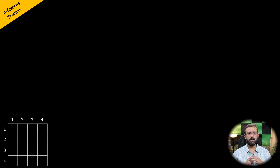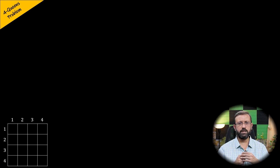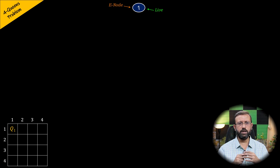Let us take an example of the 4 queens problem and solve it using the branch and bound approach. Initially, there are no queens placed on the chessboard. So we start with the root node, which is node 1 of the state space tree, and is the live node and becomes the E node. Then node 1, which is the E node, is expanded. The possibility is to place queen 1 in row 1 and column 1, so x1 will be 1, and we are at node 2 of the state space tree.